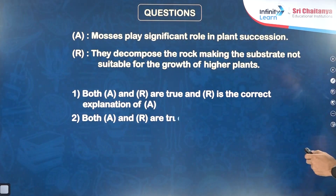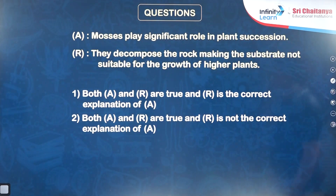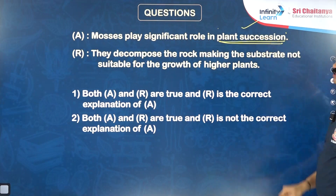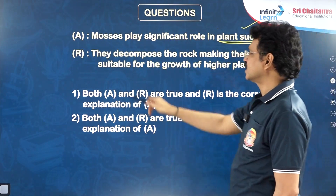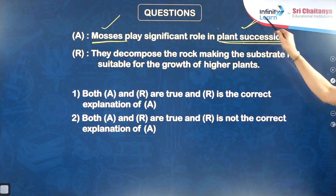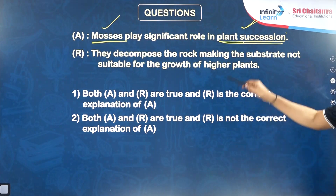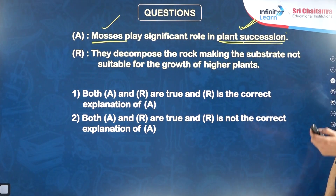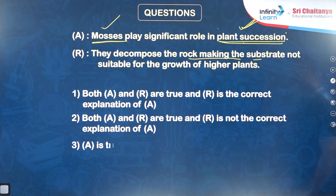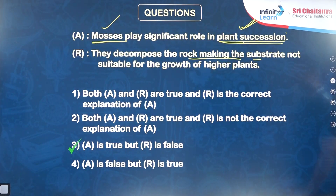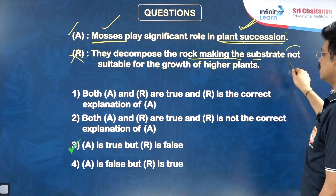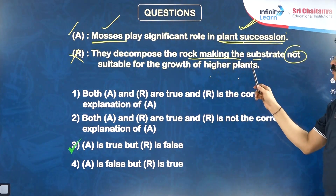Next question: Mosses play a significant role in plant succession. In geological plant succession, after lichens as pioneers, mosses are the second occupants of lithoseral areas. Assertion is true. Reason: Apart from lichens, they decompose rock making the substrate not suitable for the growth of other plants — this reason is false. Actually mosses make the substrate suitable, not unsuitable, for the growth of higher plants.